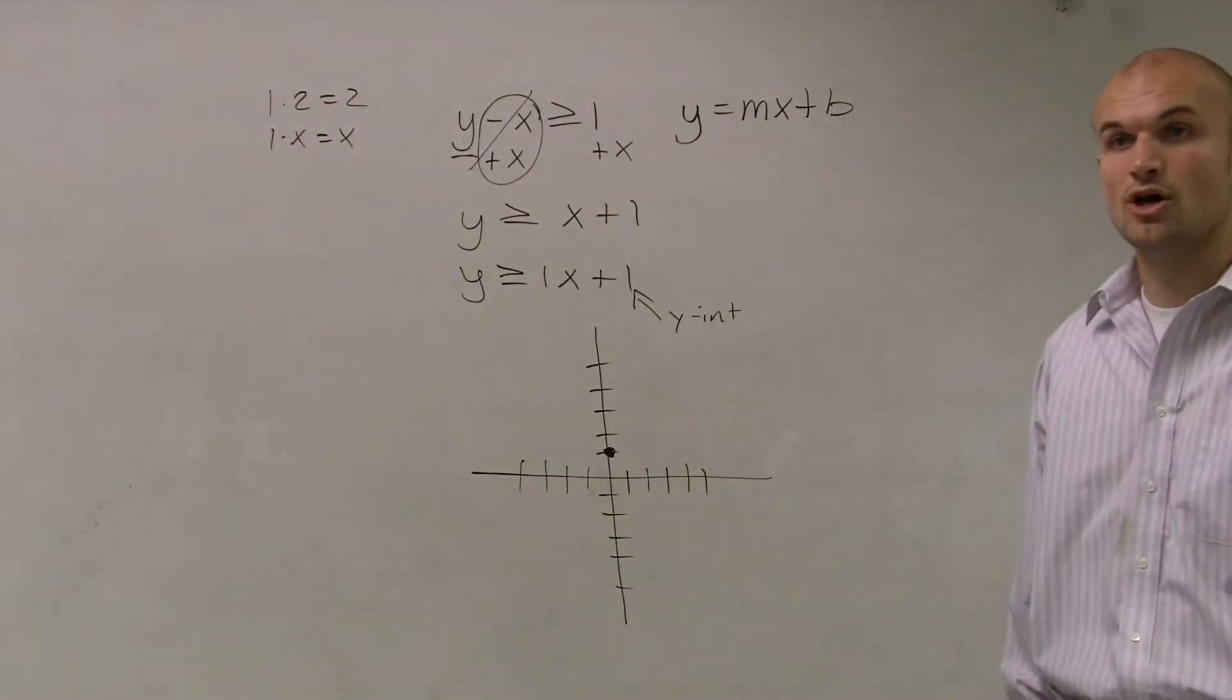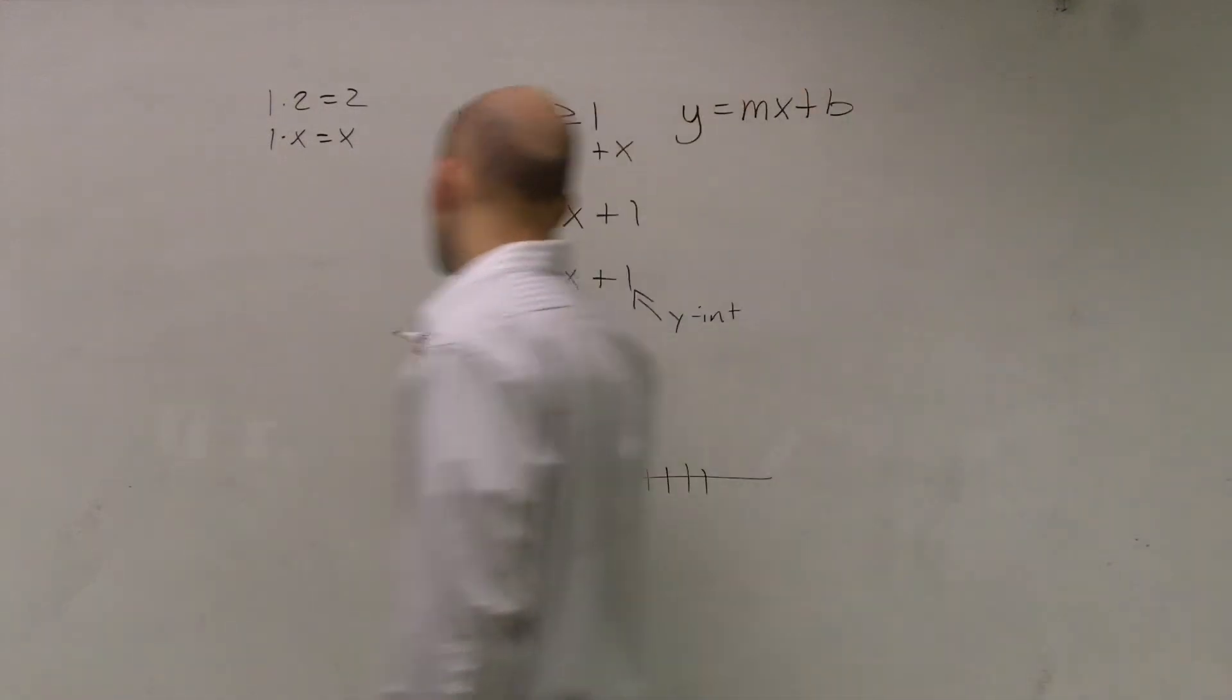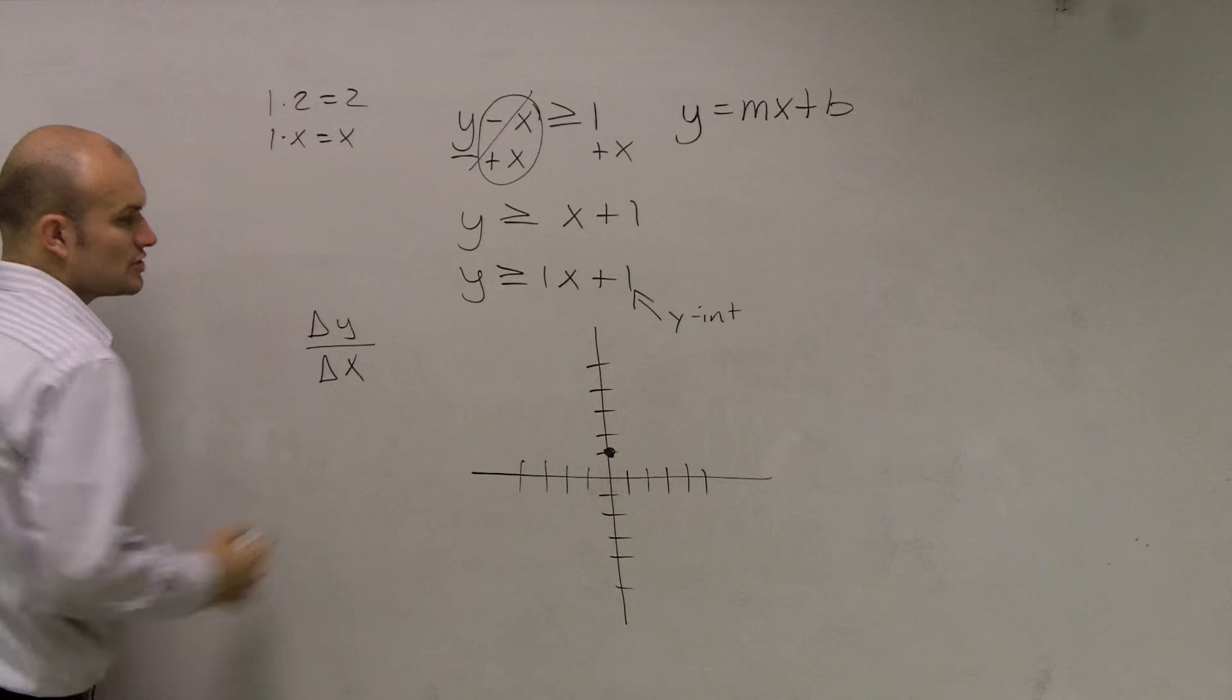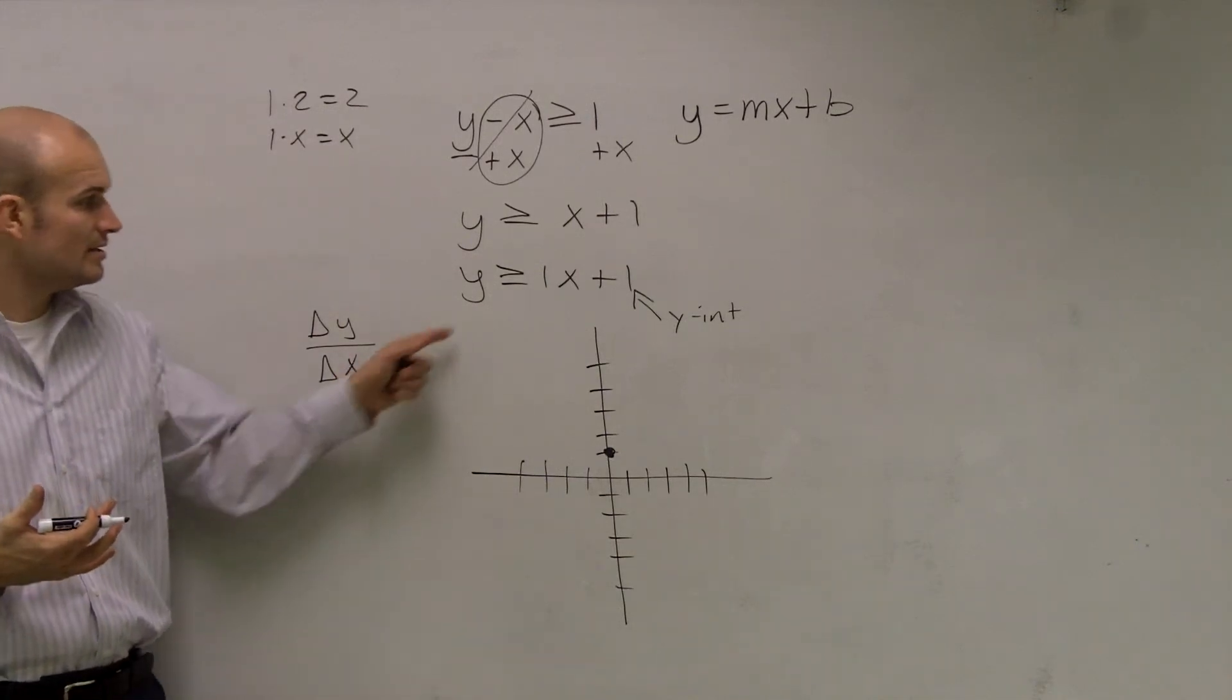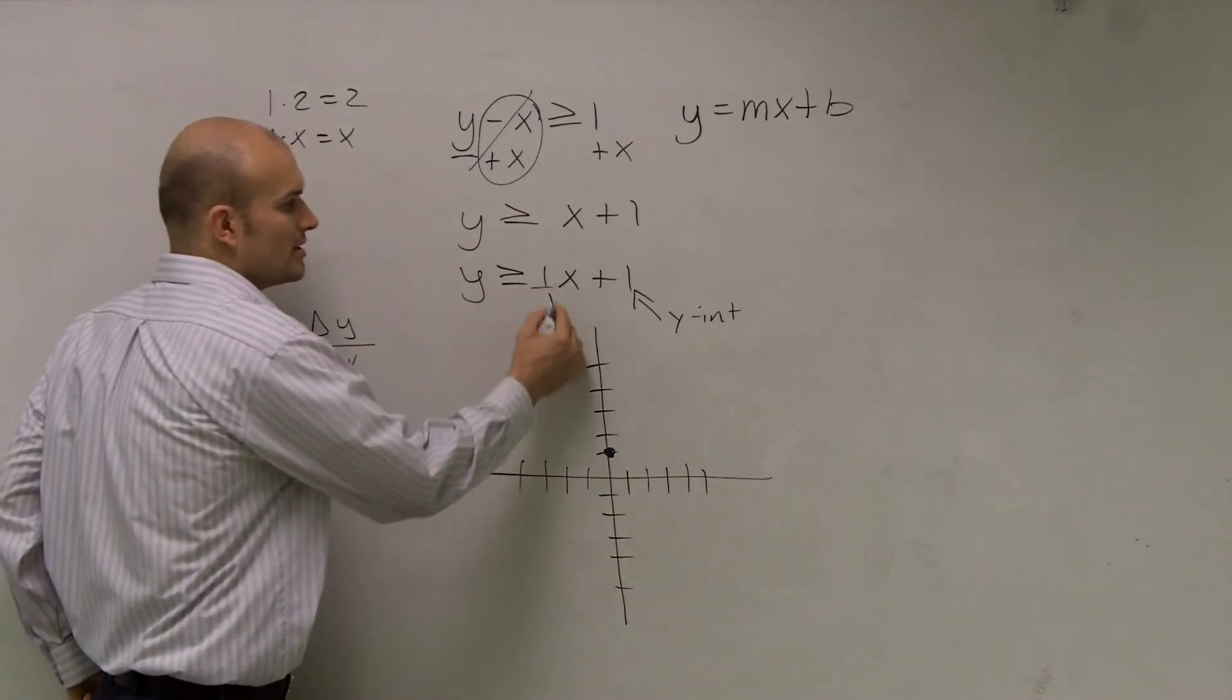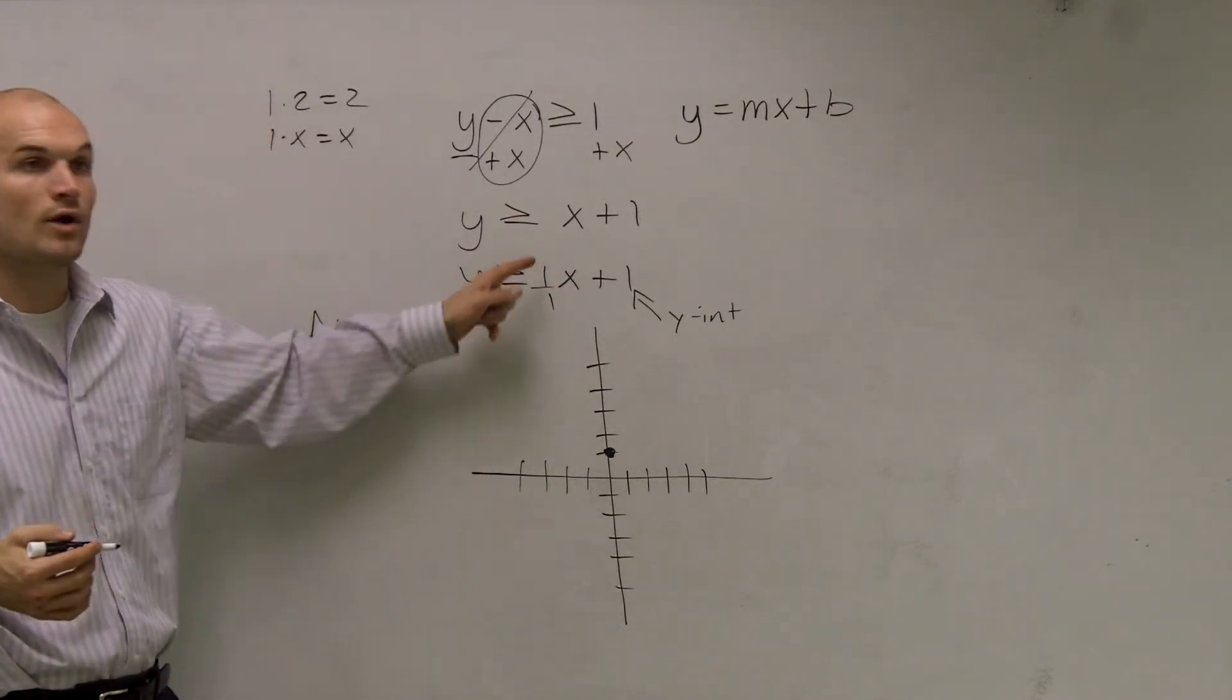Then, the next thing is you're going to need to determine the slope. Remember, slope is your rise over run, or your change in y over your change in x. So to determine if this is not in a ratio, right? So what I can always do when I have a whole number is put it over 1. So now I have 1 over 1.